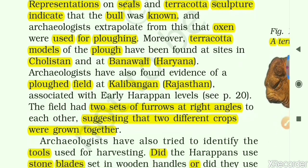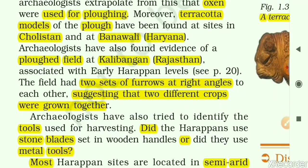Archaeologists have also found evidence of a ploughed field at Kalibangan in Rajasthan. The evidence is that the field had two sets of furrows at right angles to each other. Furrows are the narrow depressions left in the soil after the plough moves ahead — called 'khud' in local UP language. These two sets of furrows at right angles suggest that two different crops were grown together, one crop in each set of furrows.